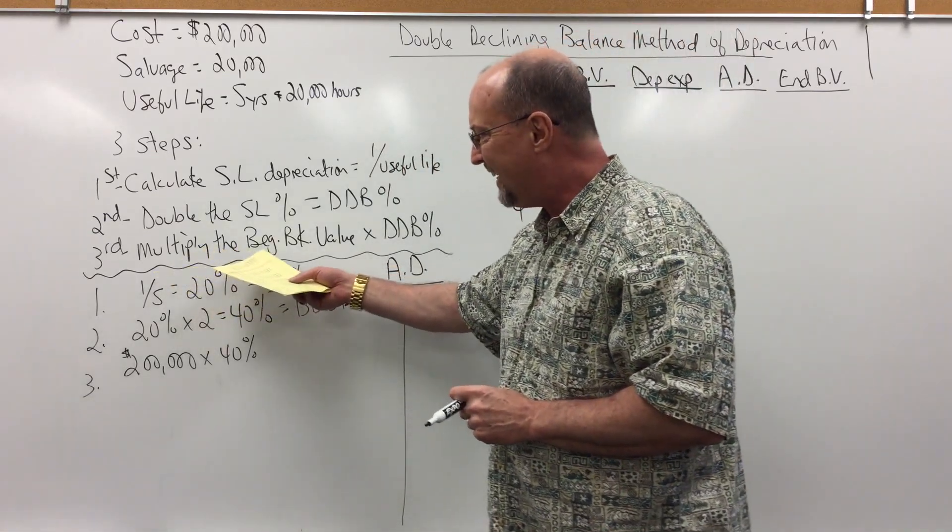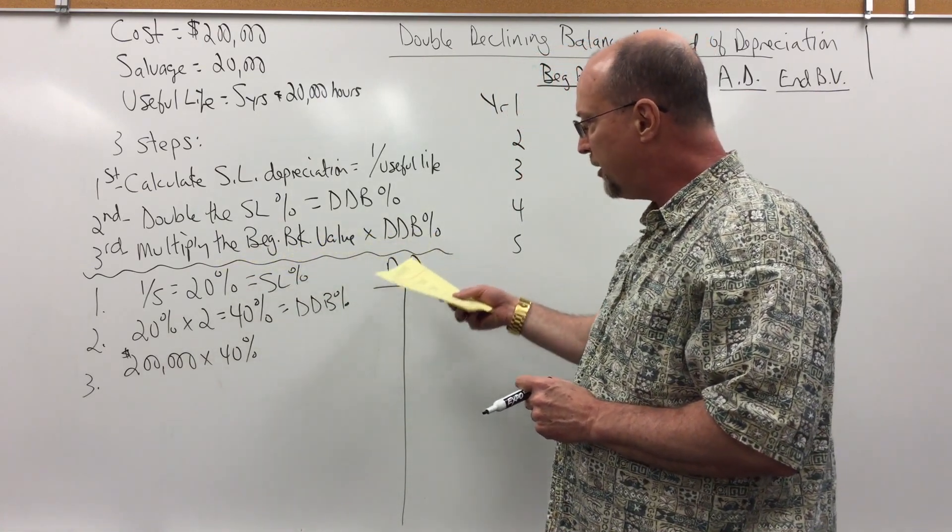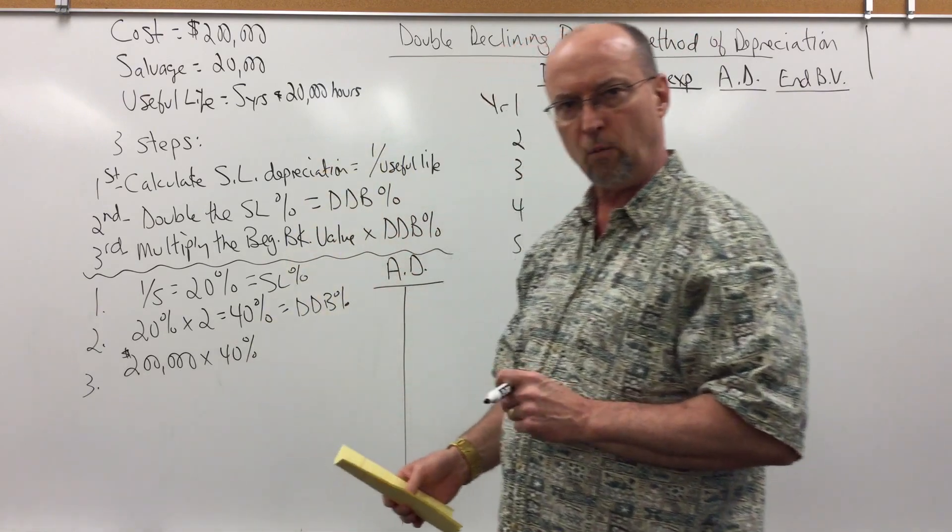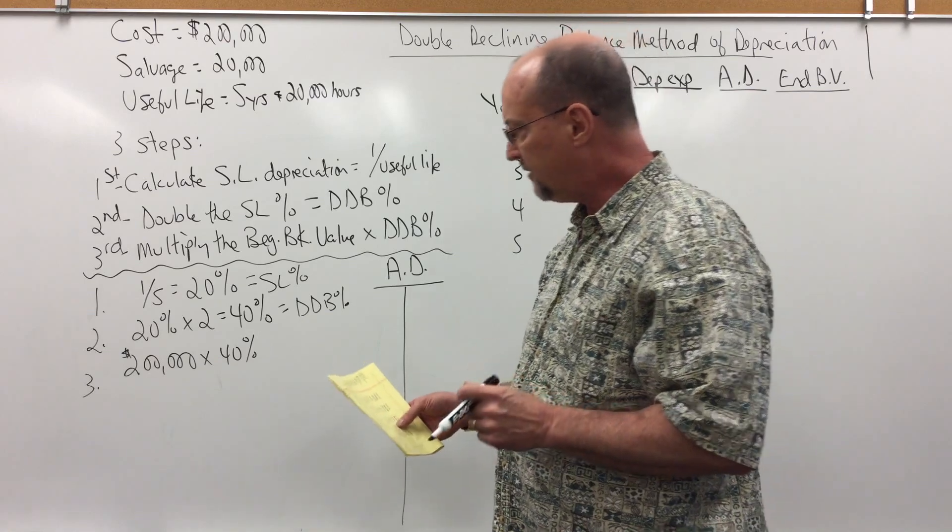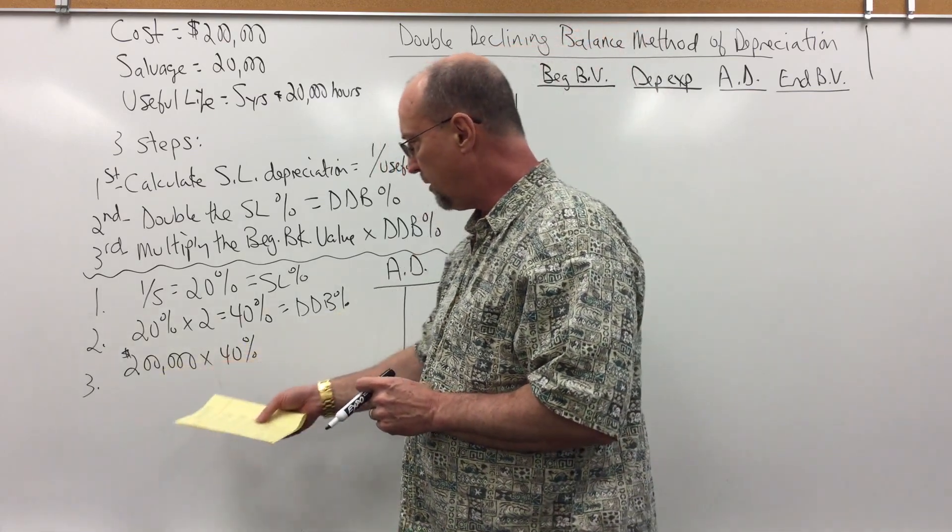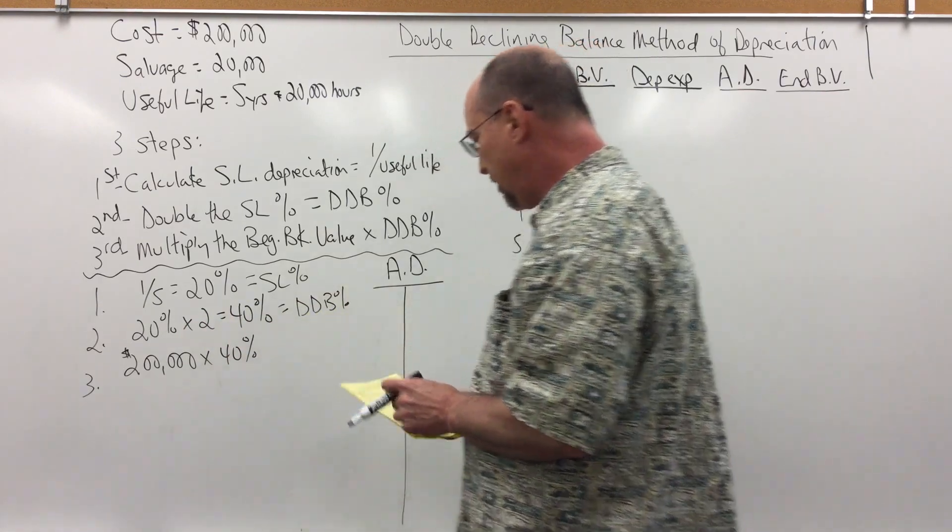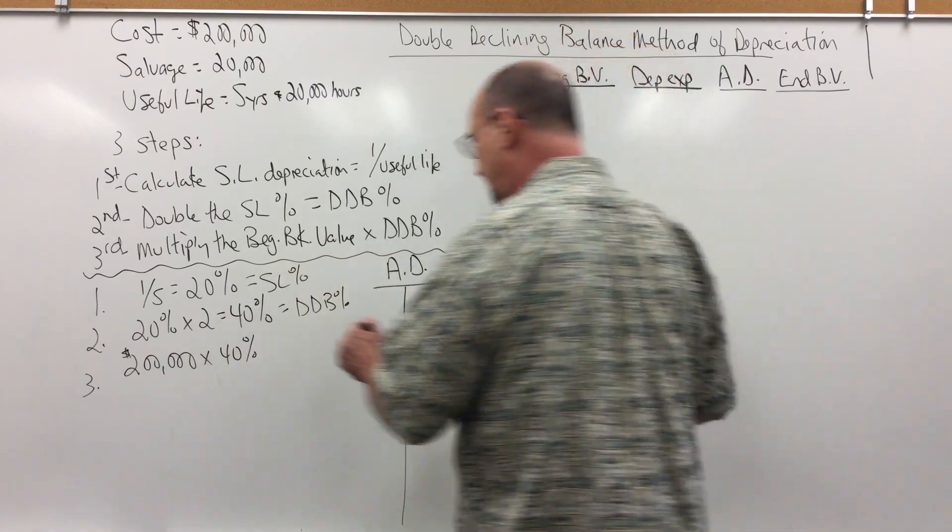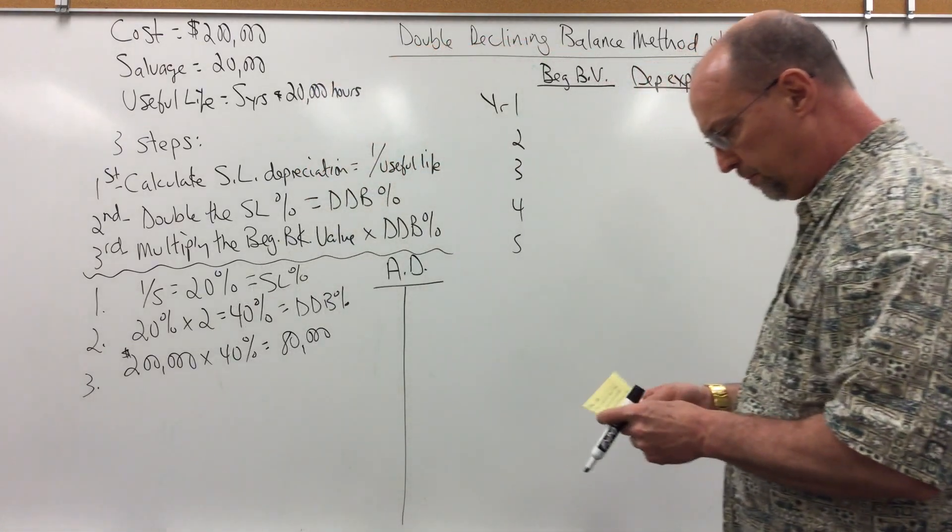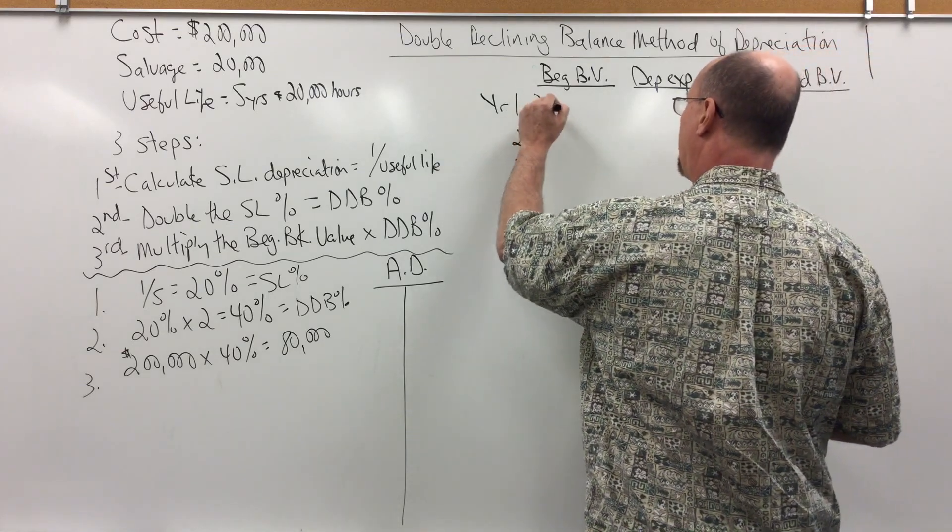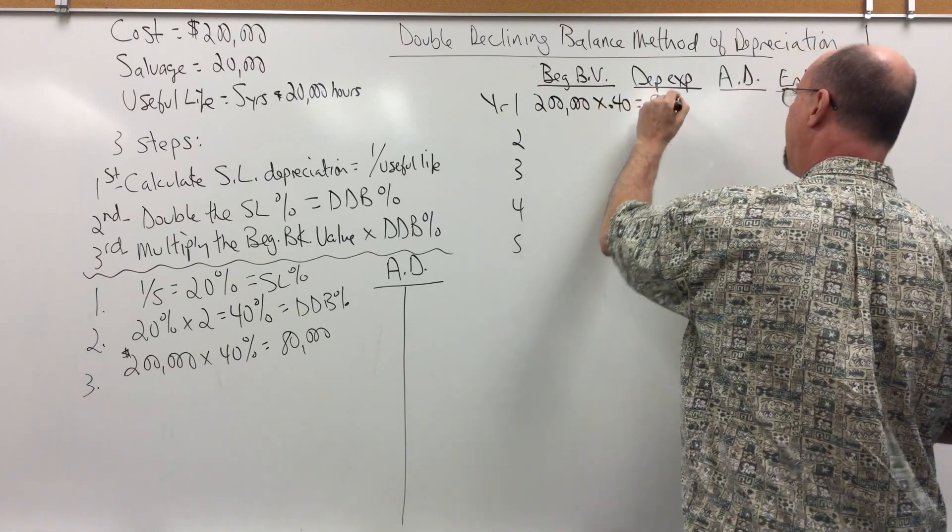we multiply the beginning of the year book value times the double declining balance percentage. Since the beginning book value in year 1 is always cost, because we have not yet recorded any depreciation. In this example, 200,000 times the 40% double declining balance percentage will give us year 1 depreciation, which in this case would be $80,000. My beginning book value times 0.4 is 80,000.